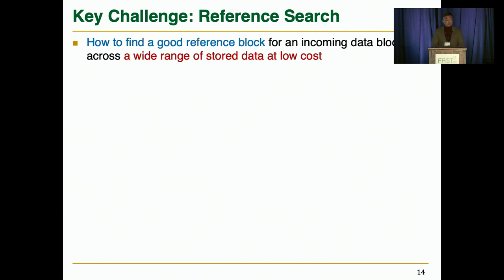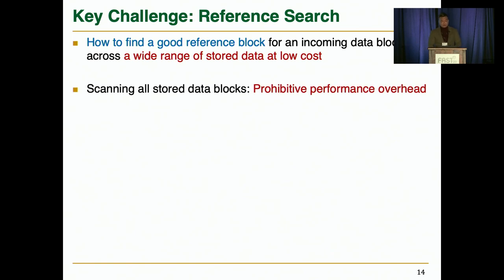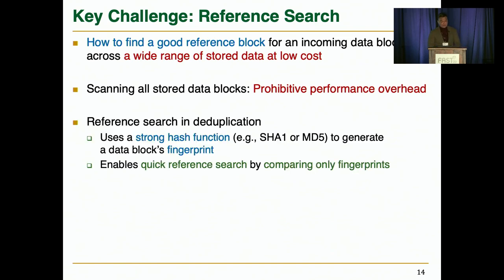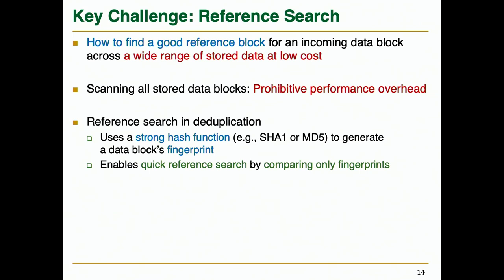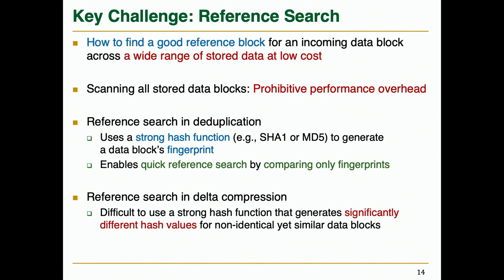The key challenge in post-deduplication data compression is how to find a good reference block for an incoming data block across a wider range of stored data at low cost. Scanning all previously stored blocks is infeasible due to its prohibitive performance overhead. Deduplication requires searching for an identical block across the storage system. A common approach is to use a strong hash value to generate each data block's fingerprint, which enables a quick exact match search by comparing only fingerprints. However, fingerprint is difficult to use for data compression as a strong hash function is typically designed to generate significantly different hash values, especially for similar data blocks, in order to minimize the hash collision rate.